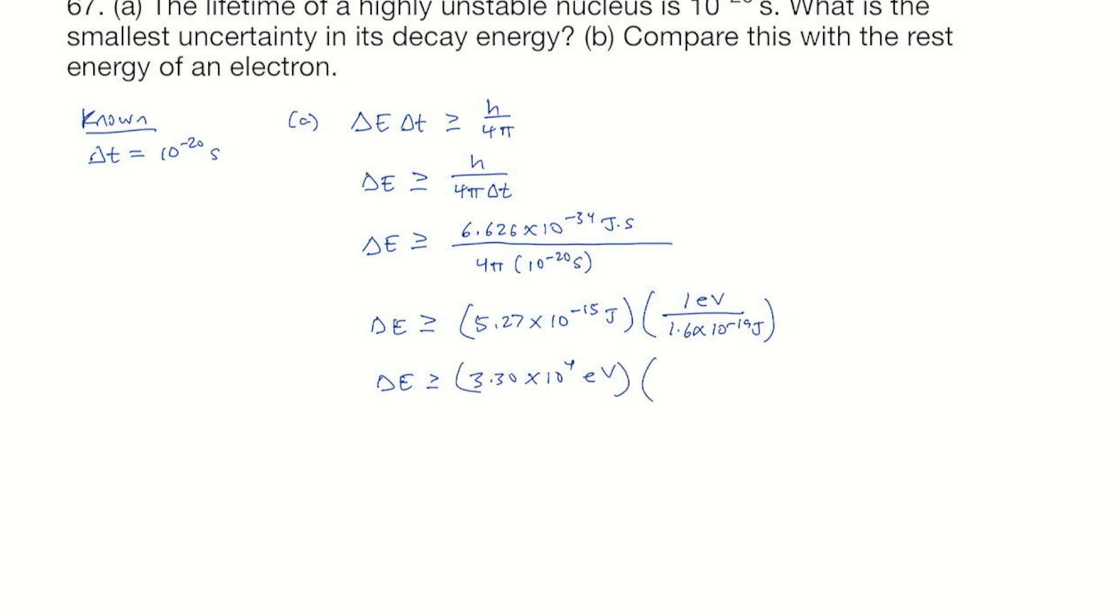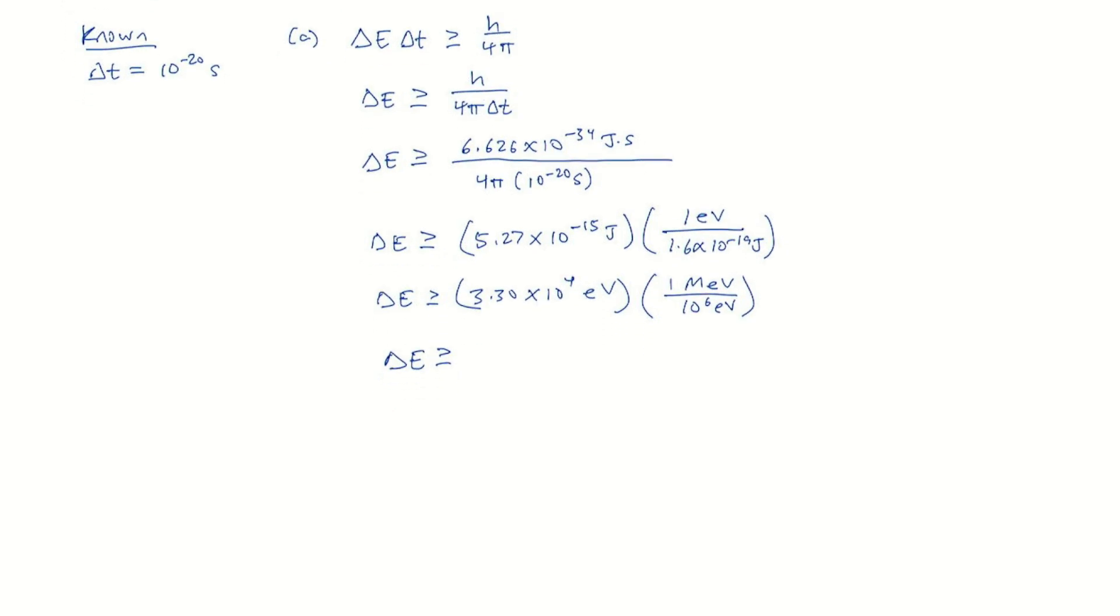Let's turn that into mega electron volts. One mega electron volt is 10 to the sixth electron volts. So delta E is greater than or equal to 3.30 times 10 to the minus 2 mega electron volts. That means the smallest uncertainty, the smallest delta E is equal to 3.30 times 10 to the minus 2 mega electron volts.